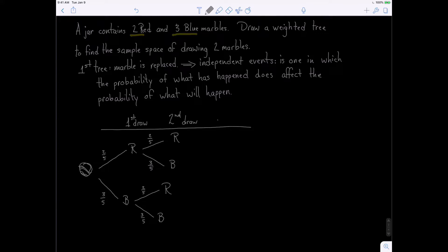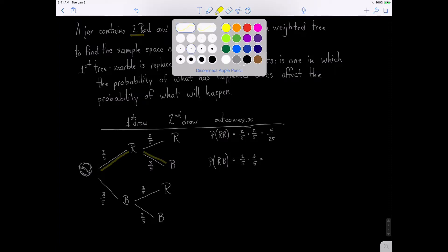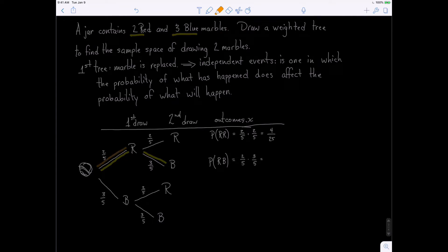Let's write out our outcomes. The probability of red then red: we multiply the weights on each branch, so that's two-fifths times two-fifths, which is four twenty-fifths. The next outcome is the probability of red followed by blue: that's two-fifths times three-fifths, which is six twenty-fifths.